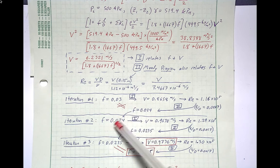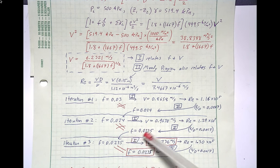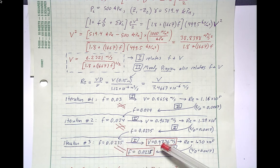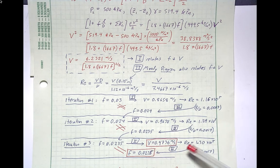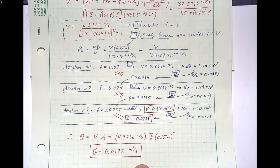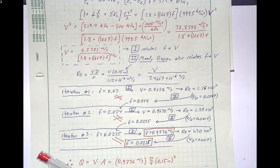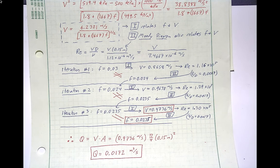With f = 0.024 as the new assumption, we plug into the velocity formula, compute a new Reynolds number, and go to the Moody diagram. The result is f = 0.0235, still not converged. Iterating once more, we find the friction factor equals the assumed value, converging at f = 0.0235. We then multiply the converged velocity by the pipe area to get a volumetric flow rate of 0.0172 meters cubed per second, which gives a pressure of 500 kPa at the end — a smaller flow rate than 0.03, confirming less losses yield higher pressure.